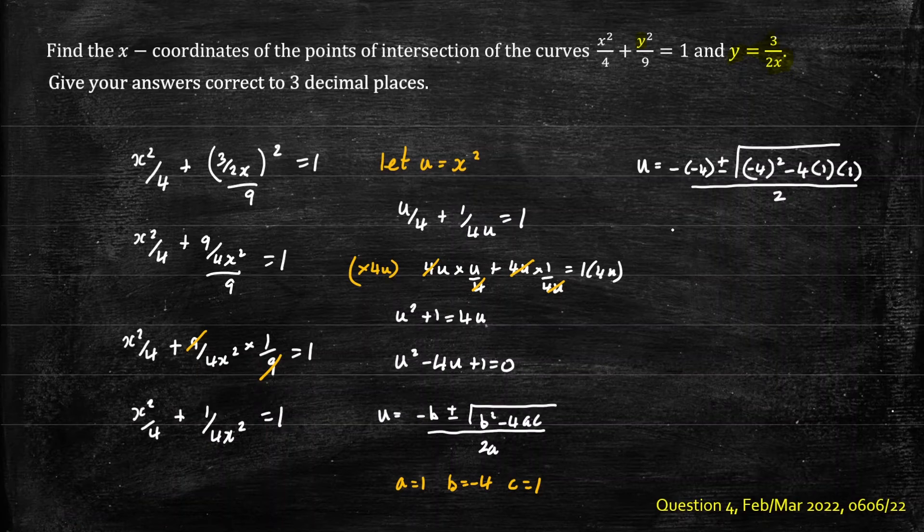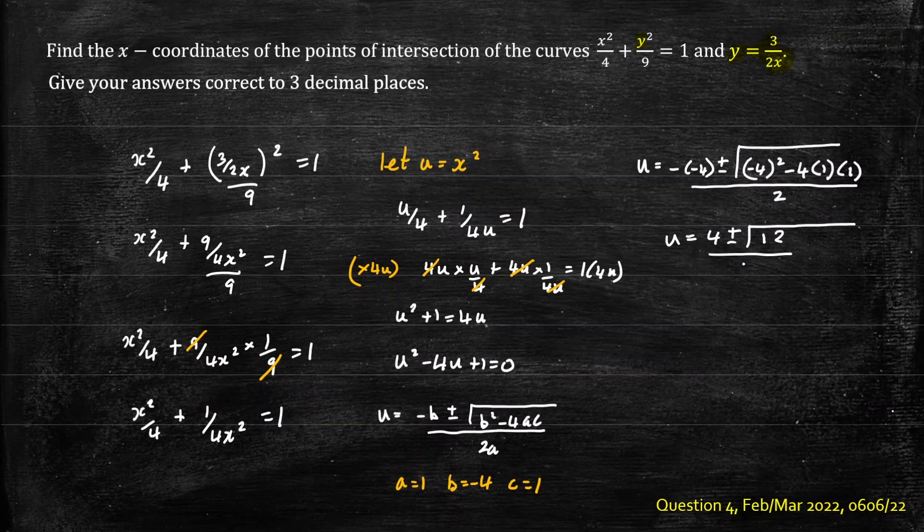Let's simplify a bit more. So u can be written as 4 plus or minus the square root of negative 4 squared is 16 minus 4 is 12 divided by 2. And that will simplify down to u equals 2 plus or minus root 3.